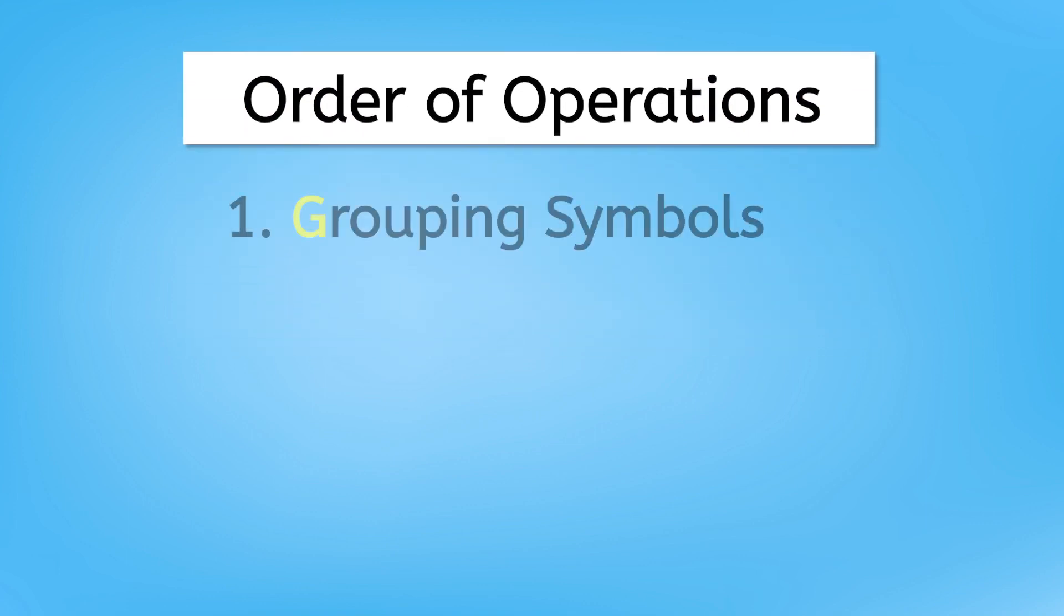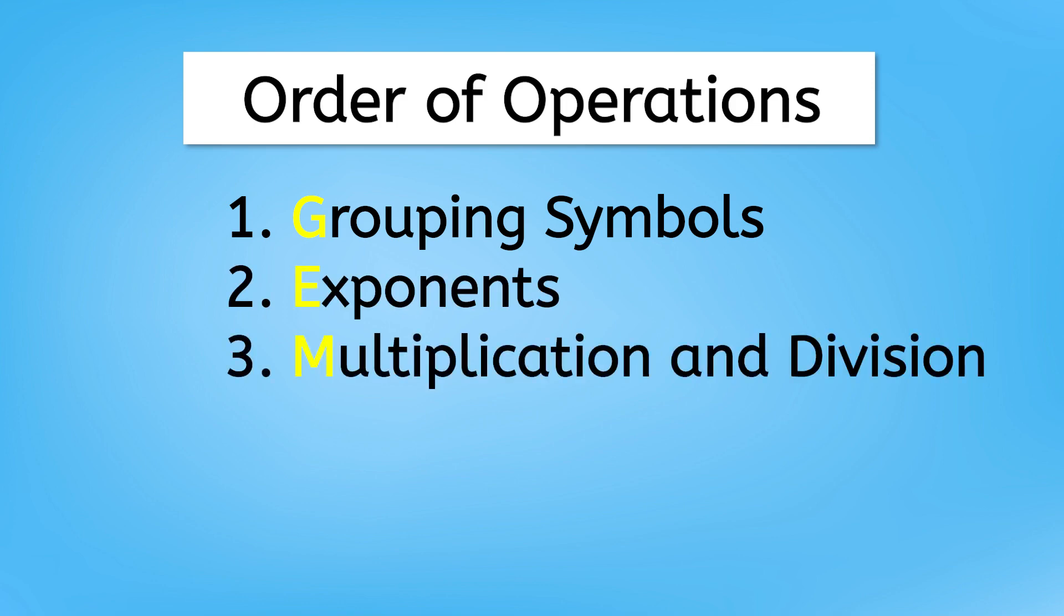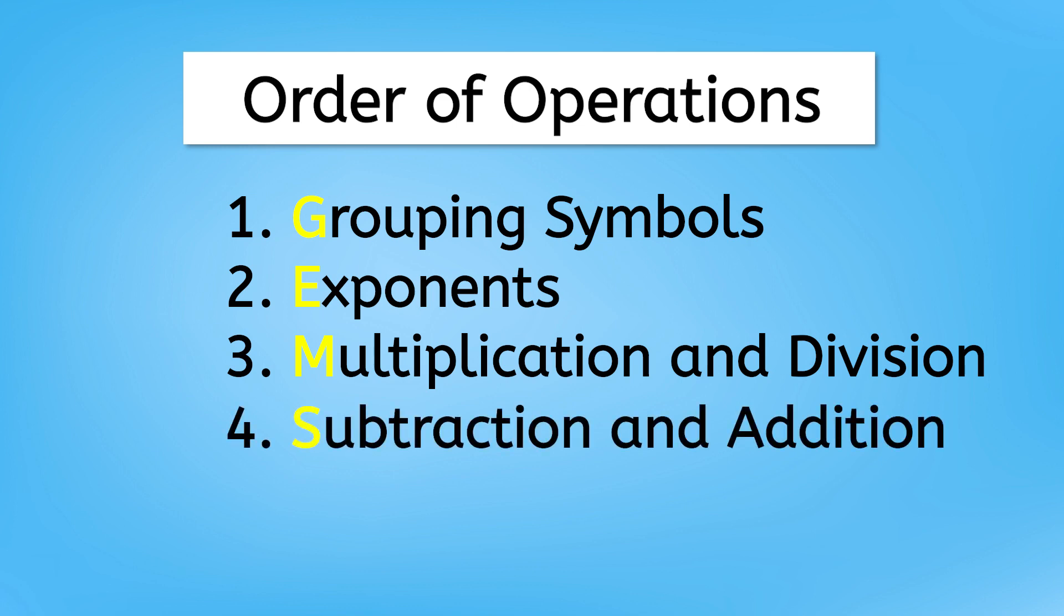First, we always solve what's inside grouping symbols, like parentheses or brackets. Then we simplify exponents. Next, we handle multiplication and division. And lastly, we finish the equation by solving any remaining subtraction and addition.